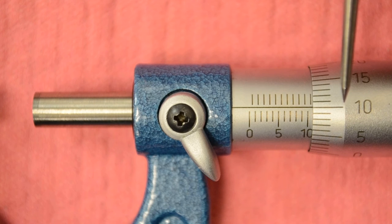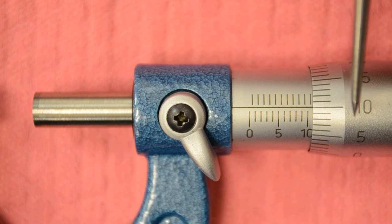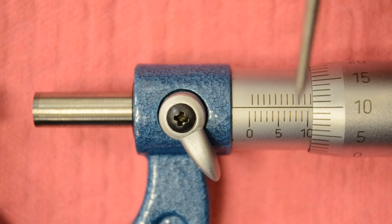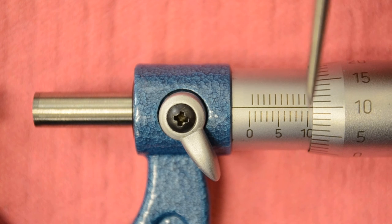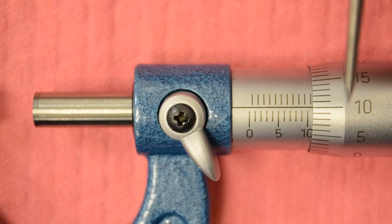And on the thimble, whatever you read there, it's going to be .10. So we're going to add it together. We're going to take 10 millimeters .50 plus .10 and that makes 10.60 millimeters.